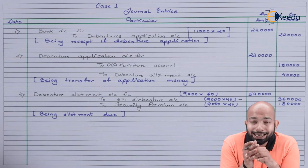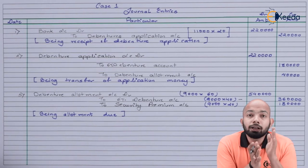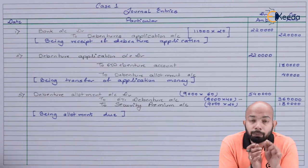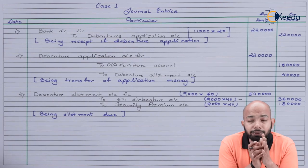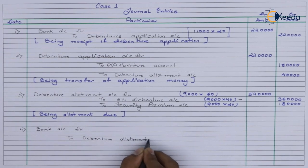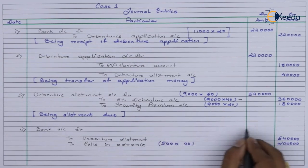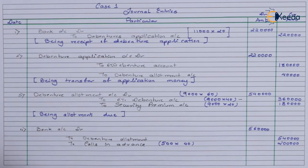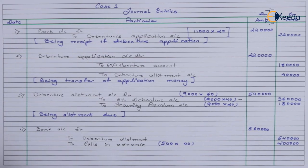The next entry is receipt of allotment money. Mr. X paid the final call money at the time of allotment for 500 debentures — so we mention calls in advance (an asset for us). Entry: Bank Account debit, to Debenture Allotment Rs.5,40,000 and to Calls in Advance (500 × Rs.40) Rs.20,000. Total bank received: Rs.5,60,000.